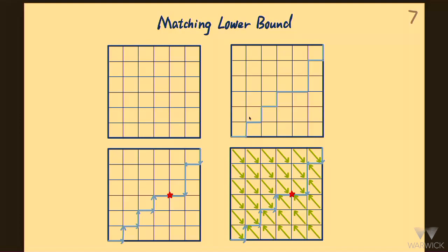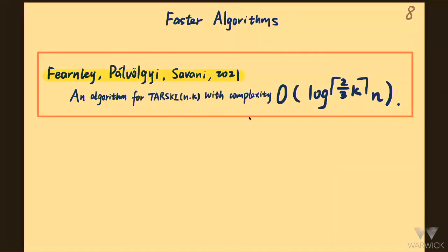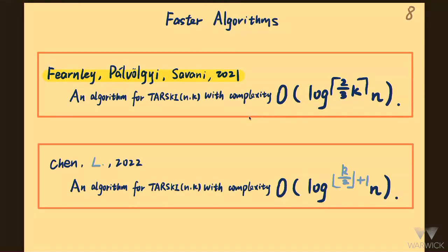This suggests they left proving a log^k lower bound as the most important open question. Surprisingly, Papadimitriou and Giannopoulou in 2021 gave an improved upper bound that disproved the conjecture, giving a log^(roughly 2k/3) algorithm. In particular, for 3D Tarski they give a log^2 n query algorithm. Their argument is that you can save one log n for every 3 dimensions. Last year we got a further improved upper bound: log n to the (k/2), which is still the best upper bound currently known.